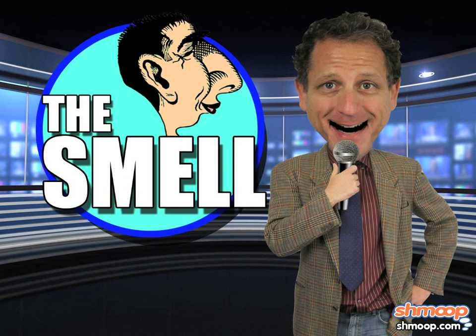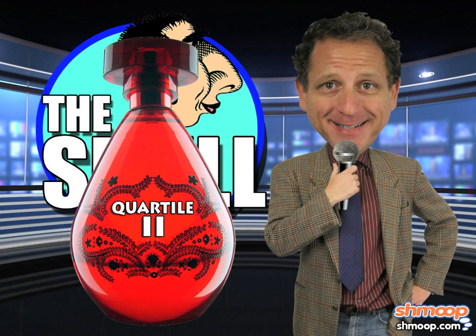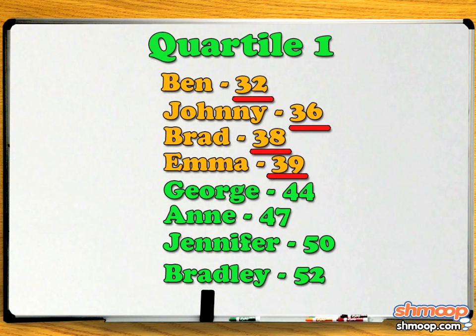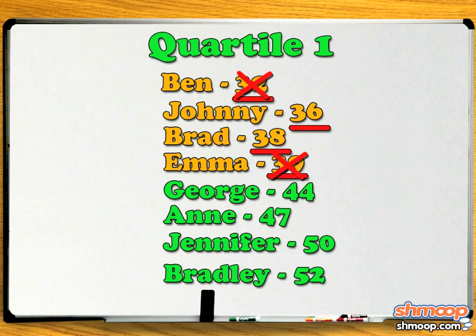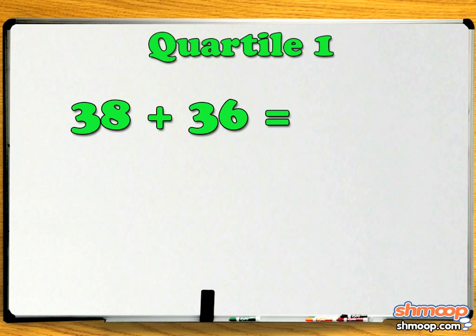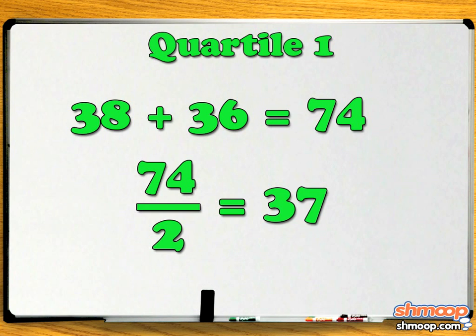Which would be a great name for a fragrance. Now we want to find the celebrities who are less than Quartile 2, also known as Quartile 1, or rancid. The two middle scores in this instance are 38 and 36. Add them together and divide by 2 to get Quartile 1. 38 plus 36 equals 74, and 74 divided by 2 equals 37.